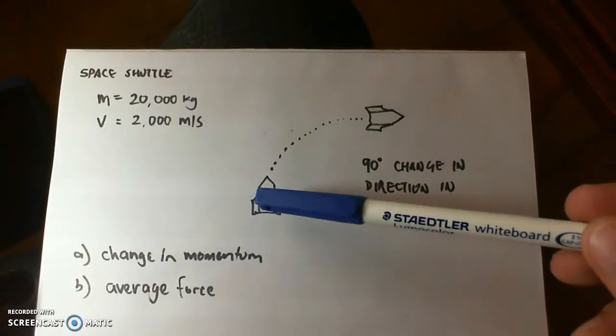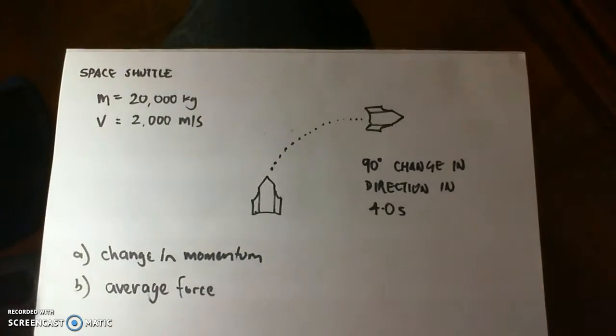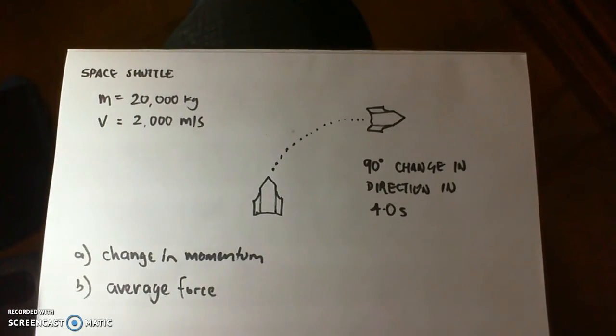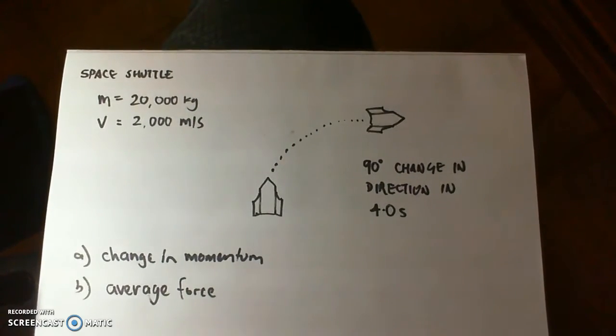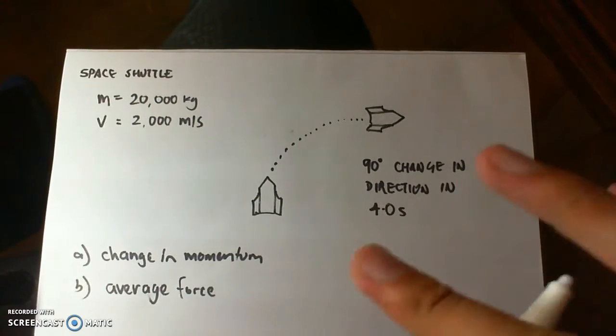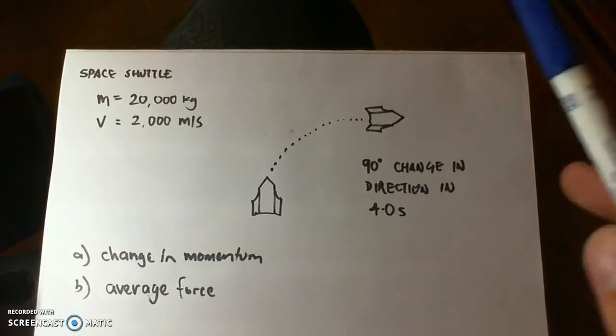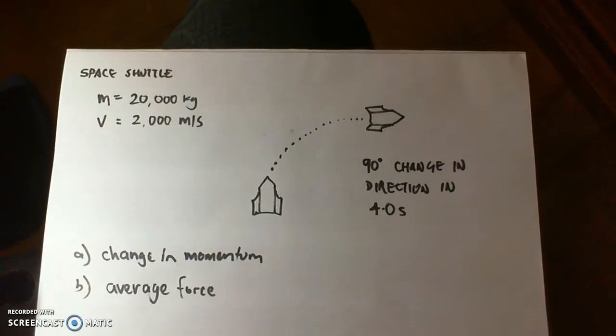And this is assuming that the rocket maintains its same velocity. So what do we know about momentum? We'll say that the change in momentum is equal to the final momentum take the initial momentum.